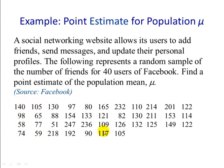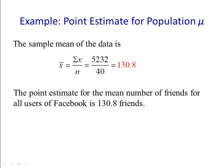This is the raw data. We have 40 users of Facebook. So to compute the sample mean, we add up the number of friends, divide it by the number of users, 40, and we get 130.8. So the point estimate for the mean number of friends for all users of Facebook is 130.8 friends.